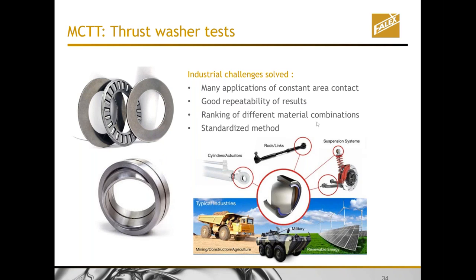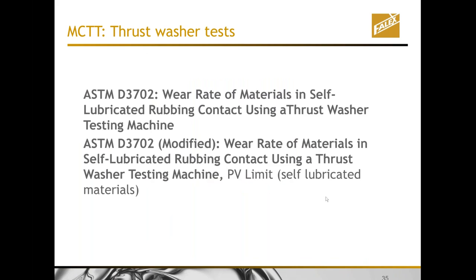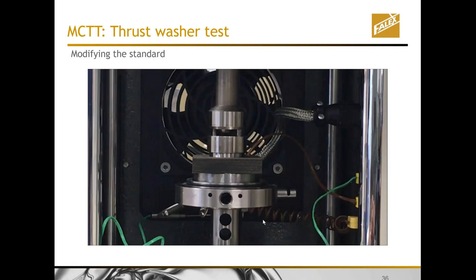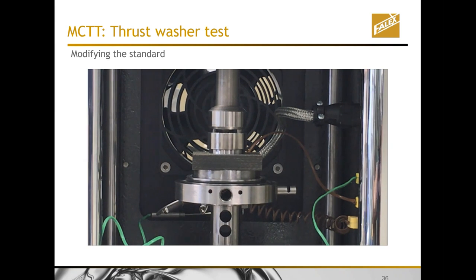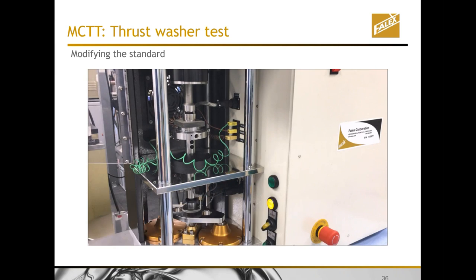You can also put bulk materials in area-to-area contacts. There are a lot of different industrial applications where the contacts are actual areas. The best-known area contact method is the ASTM D3702, which Mike already mentioned in the introduction. It's a method using a fixed geometry of a ring on top of another ring — a thrust washer contact — where you look at the wear rate of materials under fixed conditions and can also search for PV limits.